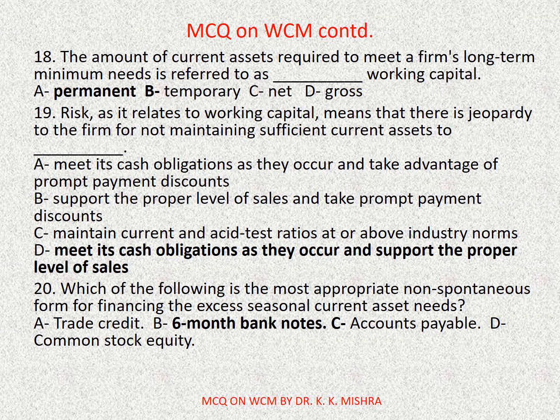Question number nineteen: risk as it relates to working capital means that there is jeopardy to the firm for not maintaining sufficient current assets to dash. Options are: A) meet its cash obligations as they occur and take advantage of prompt payment discounts; B) support the proper level of sales and take prompt payment discounts; C) maintain current and acid test ratios at or above industry norms; D) meet its cash obligations as they occur and support the proper levels of sales. Correct option is D.